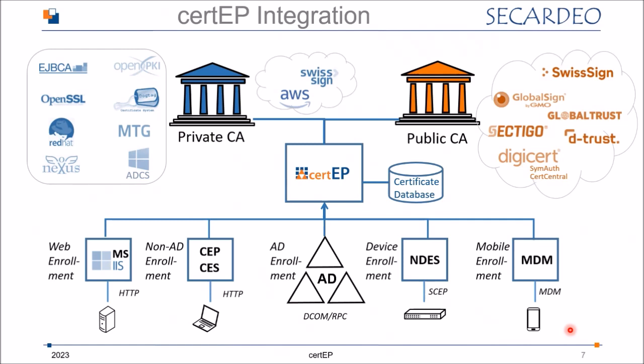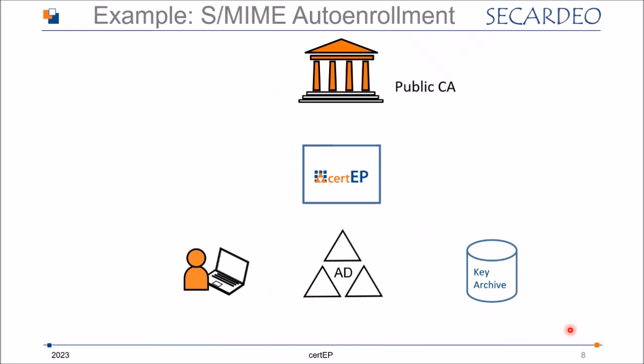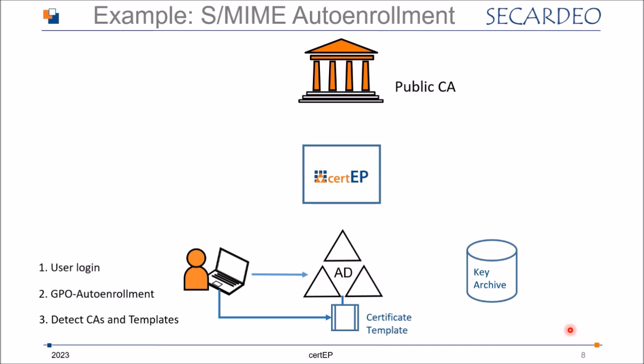Here is a typical scenario for customers using S/MIME certificates, which is important to understand the new features explained later. In the standard S/MIME auto-enrollment: the user logs in to their computer and Active Directory, the client receives auto-enrollment instructions from group policies, then looks for available CAs and certificate templates in Active Directory. The computer determines it needs a new certificate based on a template, performs key pair generation, and a certificate signing request is created and transferred to CertiP.